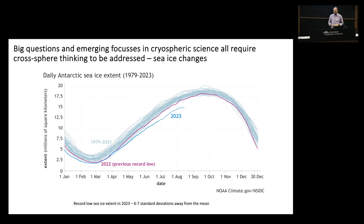That's one big question. The next — I think Elizabeth mentioned this — is changes in sea ice extent. This year we saw record low sea ice extent around Antarctica, beating the previous record of 2022, something like six to seven standard deviations below the mean. We don't really know what's causing this. It could be changes from the atmosphere, warmer ocean surface layers, or even changes in input from the cryosphere itself. All of this is probably pointing towards a regime change.